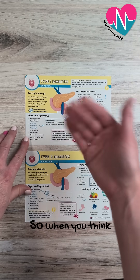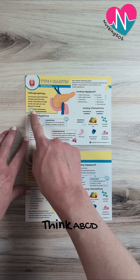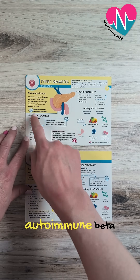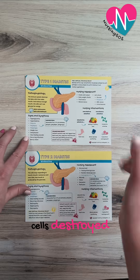So when you think of type 1 diabetes, here's your memory trick. Think ABCD — autoimmune, beta cells destroyed.